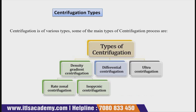Density gradient centrifugation allows the separation of all components present in a mixture and allows for their measurement as well. There are two forms: rate zonal centrifugation and isopycnic centrifugation. They separate the many components present in a mixture based on their density.